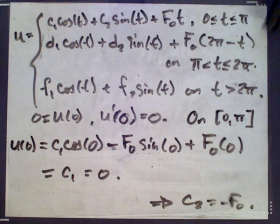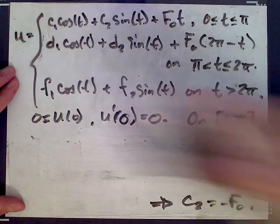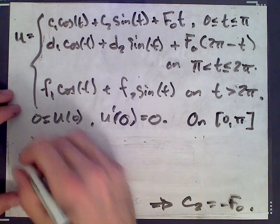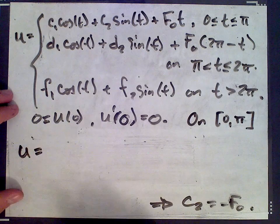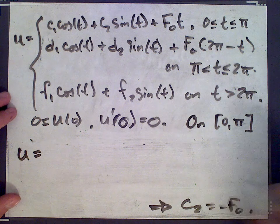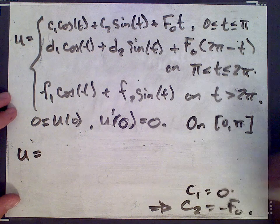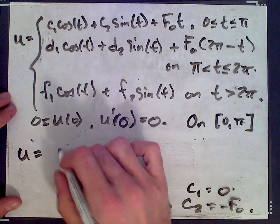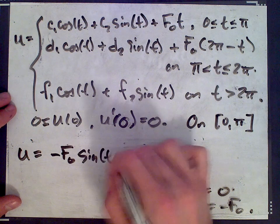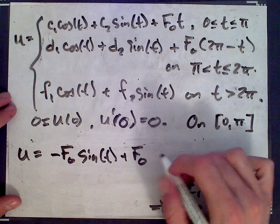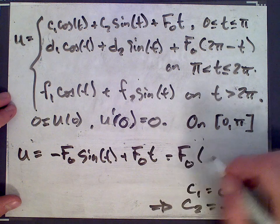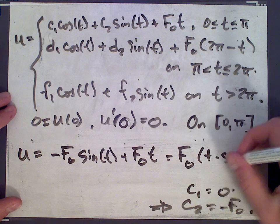So what we get is that, again, on 0 to π, we get u equals, so c1 is 0, c2 is negative f0, we get negative f0 sin(t) plus f0 t, which is f0 times (t minus sin(t)).